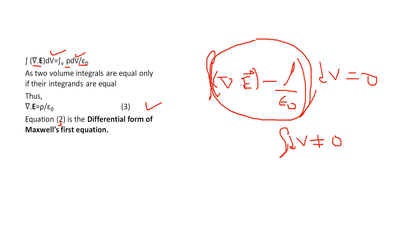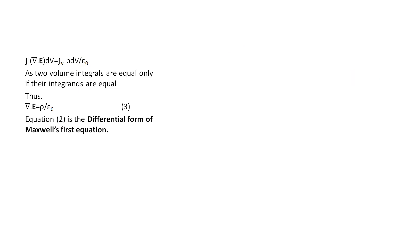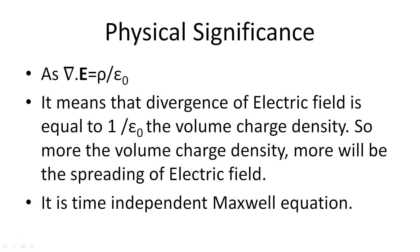The physical significance: del dot E equals rho by epsilon-naught means the divergence of the electric field equals one by epsilon-naught times the volume charge density. So the greater the volume charge density, the greater the spreading of the electric field — divergence means spreading. It is a time-independent Maxwell's equation; it is not dependent upon time.